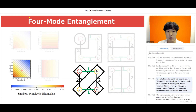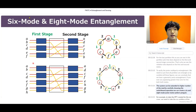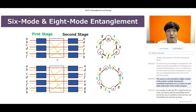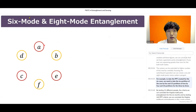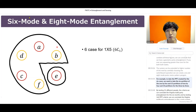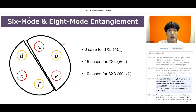To verify genuine multi-partite entanglement, we need to show that all partitions are entangled. By combining all these figures, we can conclude we have genuine multi-partite entanglement if we have any squeezing greater than zero for both stages. This system can be extended to a higher number of modes. By carefully choosing the switchboard operation, we can create 6 and 8-mode genuine multi-partite entanglement. For the 6-mode case, we need to check 6 partitions of one-by-five, 15 partitions of two-by-four, and 10 partitions of three-by-three — testing 31 different PPT criteria in total. For the 8-partite system, we test 127 different PPT criteria to confirm genuine multi-partite entanglement.